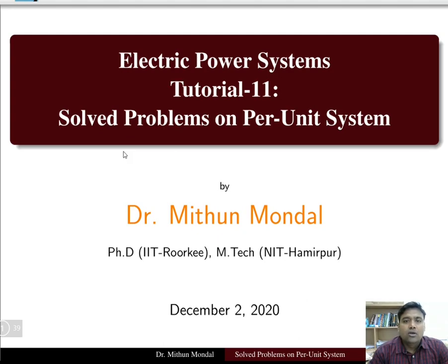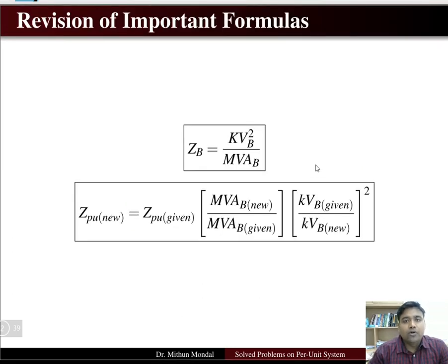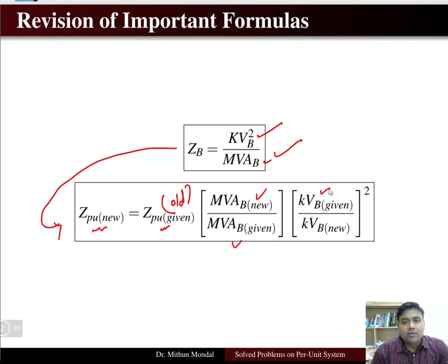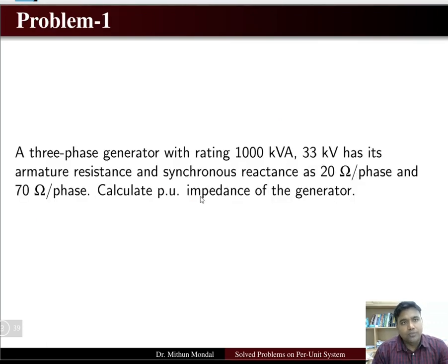Welcome to the next tutorial on electric power systems. We are going to discuss the per unit system. Let us revise some important formulas used to solve the problems. The first formula is to determine the base impedance: base impedance equals the square of the kilovolt base divided by MVA base. The second formula is Z per unit new equals Z per unit given times (MVA new / MVA given) times (kV given / kV new) squared. These two formulas are sufficient to solve per unit system problems.